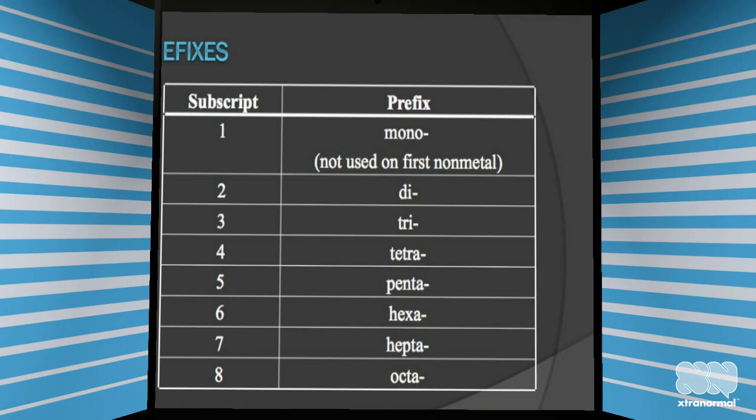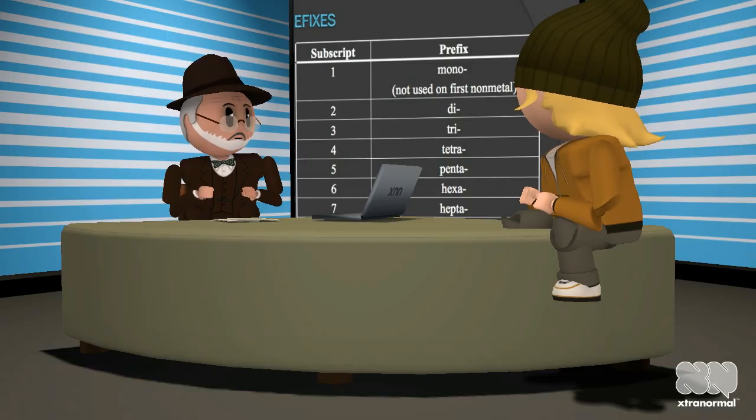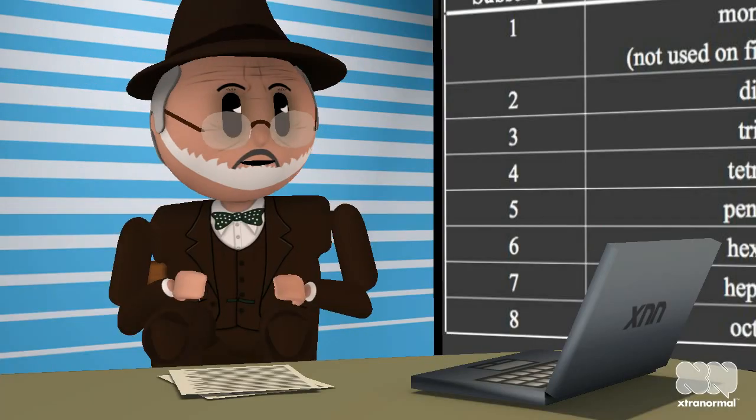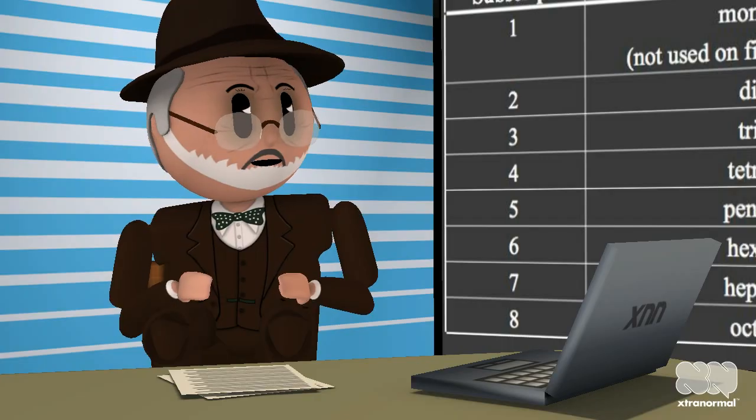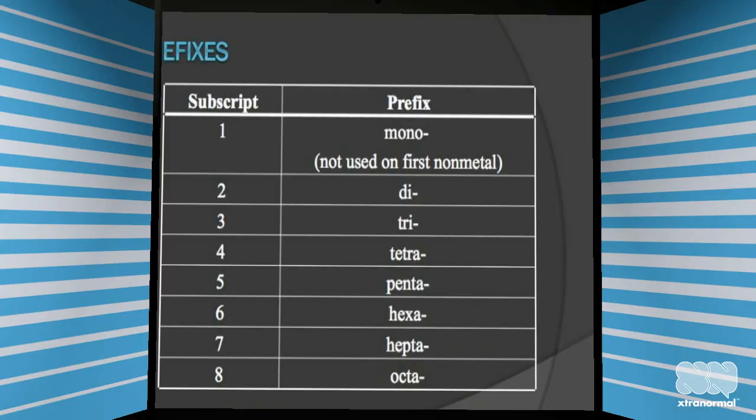This is accomplished by using a prefix for both elements in the compound. You mentioned carbon dioxide as an example earlier. Yes, in carbon dioxide you have one carbon and two oxygen atoms. Because you have two oxygen atoms, you use the prefix di.